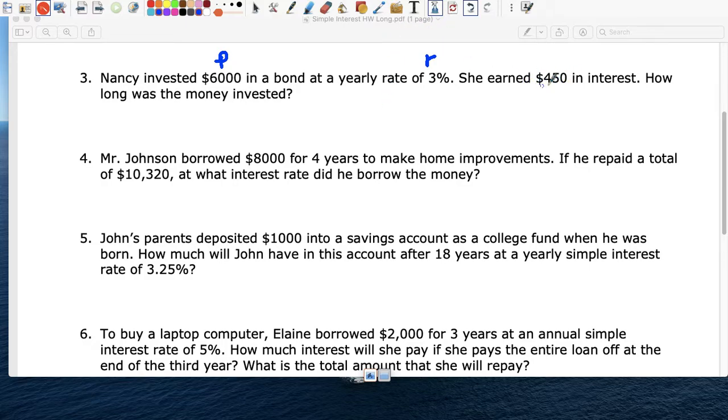And she earned $450. So this question, she deposits $6,000. They paid her 3%. She made $450. How long? How long did she leave the money invested? So that's the question here. Right? So someone deposited $6,000. The bank paid 3%. She earned $450. How long did she leave the money in the bank?